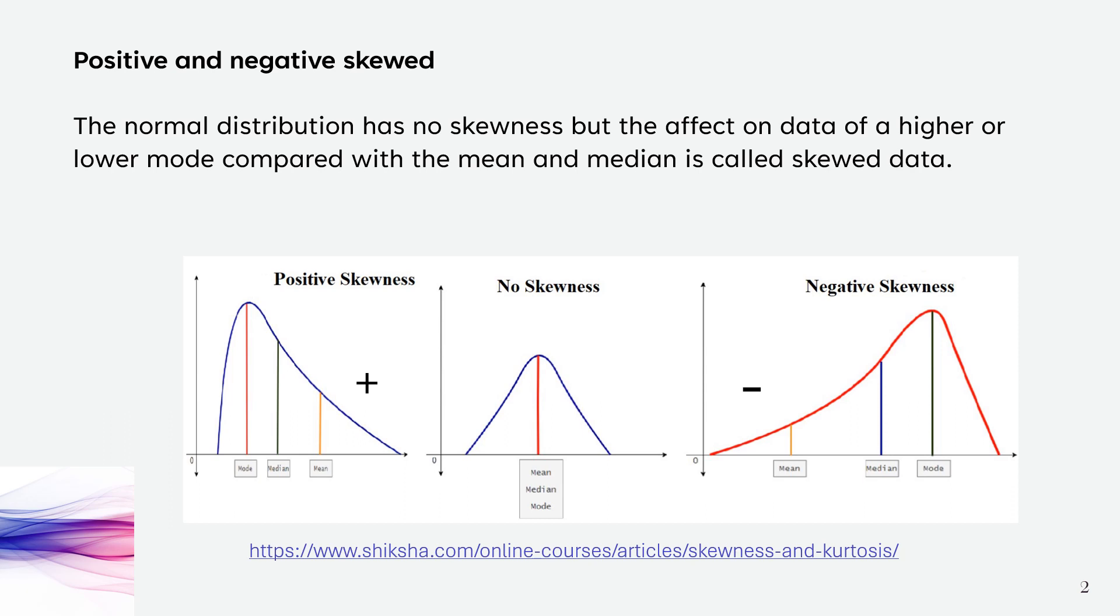But when we have a higher or a lower mode compared with the mean and median, this is called skewed data. Positive skewed is when the mode is less than the median, which is less than the mean. And negative skewness is when the mode is higher than the median and higher than the mean.